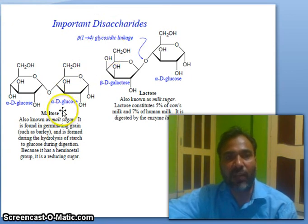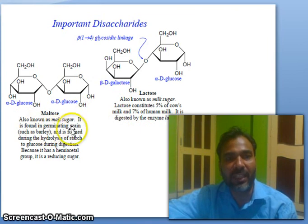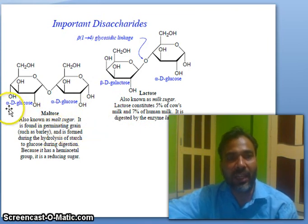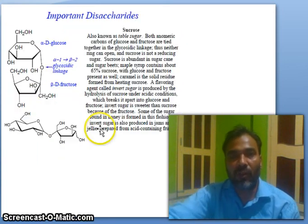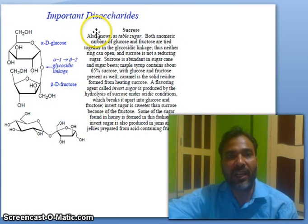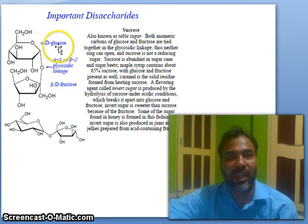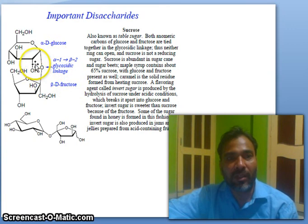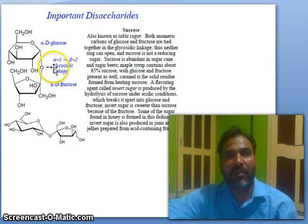Important disaccharides: maltose, also known as malt sugar, is found in germinating grains such as barley, and consists of alpha-D-glucose linked to alpha-D-glucose. Sucrose — a very important compound — consists of alpha-D-glucose and beta-D-fructose linked together by an alpha-1,beta-2 glycosidic linkage.